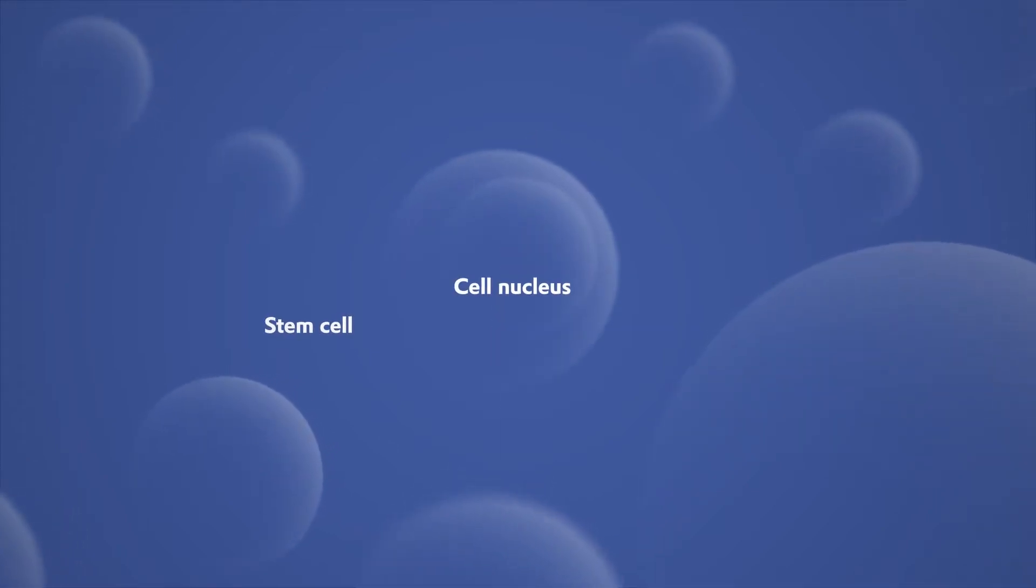These are Iris' stem cells. Stem cells are cells that reproduce themselves by division on the one hand, and form a differentiated cell, such as a muscle cell, on the other.